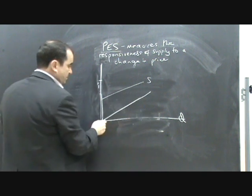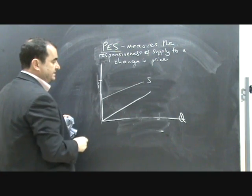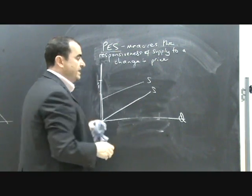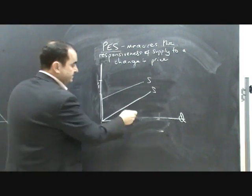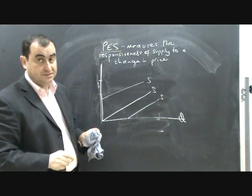If it passes through the origin, it will be unitary elasticity, and the supply will react in exactly the same proportion as the price change. And if it passes through the quantity axis, it will be inelastic supply.